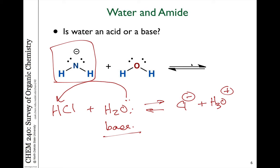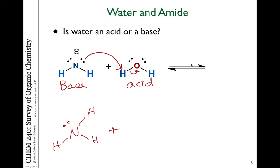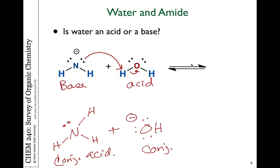Water will act as an acid. One of the lone pairs on nitrogen takes the proton off of water, breaks that bond, the electrons stay with the OH, and we form a neutral ammonia molecule and OH⁻ — so NH₃ is the conjugate acid and OH⁻ is the conjugate base. Depending on what it reacts with, water can behave as either an acid or a base. To be a base, you need a lone pair; to be a Bronsted-Lowry acid, you need a proton to give up.